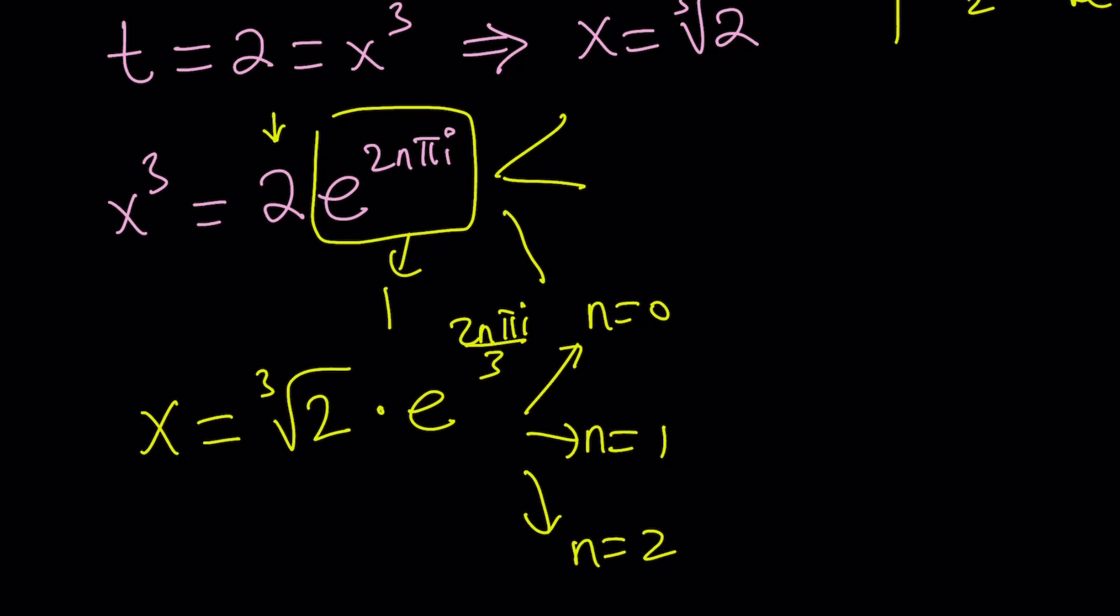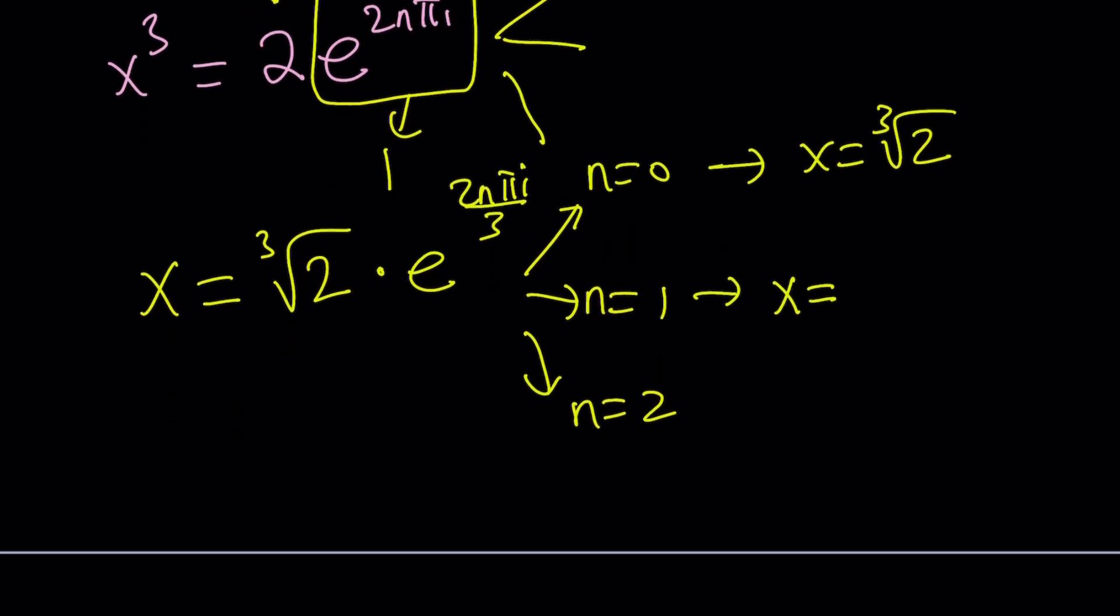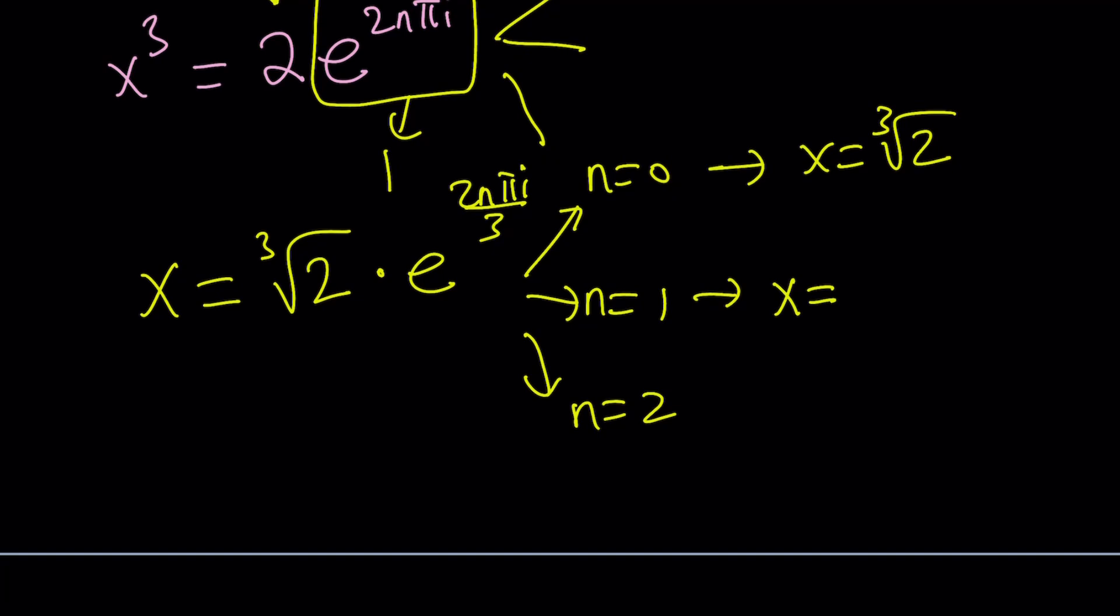n equals 0 is going to give us the obvious one: x equals cube root of 2 times 1, or just cube root of 2. That's the only real solution. The others aren't. So how do you find the other one? Well, we can kind of write this as...